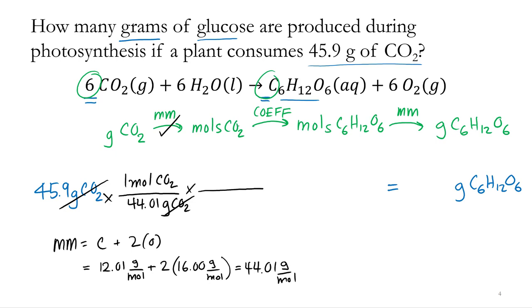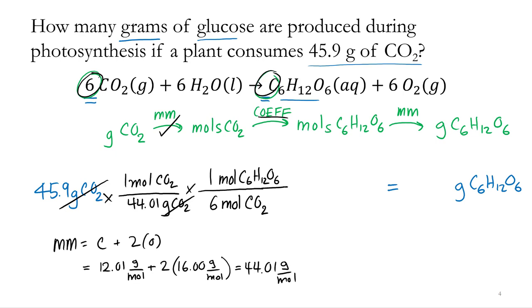Now I convert moles of CO2 to moles of glucose using the coefficients from the balanced chemical equation. For every 6 moles of CO2, I make 1 mole of glucose. So I put 6 moles of CO2 on the bottom and 1 mole of glucose on top. Moles of CO2 cancel, and I'm left with moles of glucose.